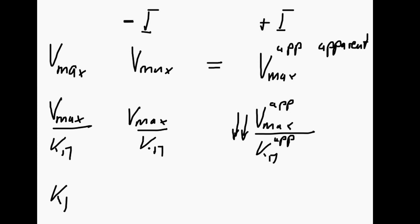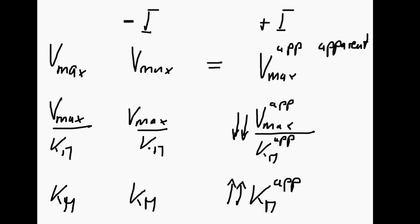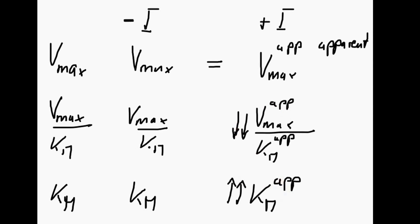Our last parameter is Km. In the absence of an inhibitor we have a baseline Km. How would Km change if we have an inhibitor? The affinity for the substrate would go down because the enzyme could grab some inhibitor, so the affinity goes down and therefore the value for Km goes up. To summarize: Vmax with or without the inhibitor does not change, Vmax over Km goes down, and Km goes up.